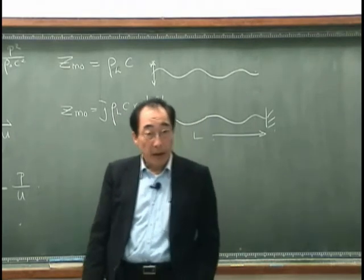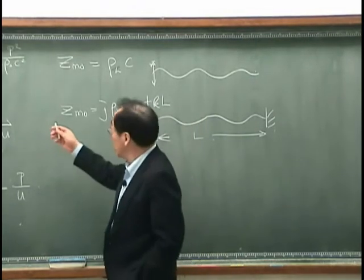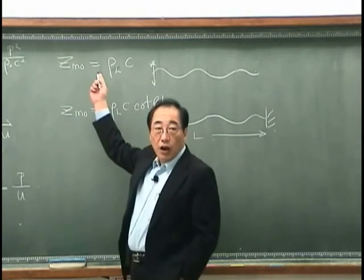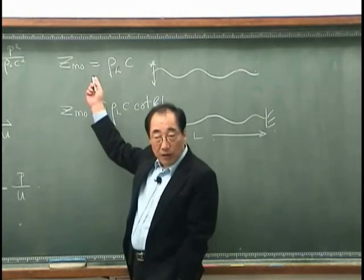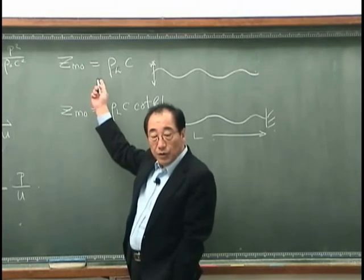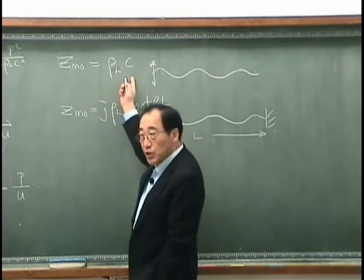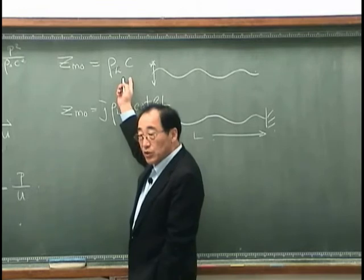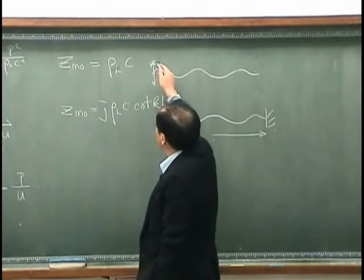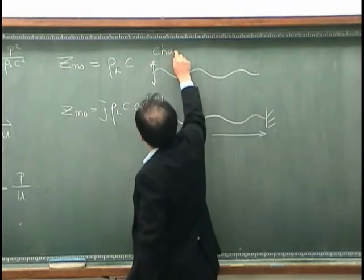And we studied the meaning of this driving point impedance when that is ρ₀Ac. ρ₀c is the characteristic impedance of a string.